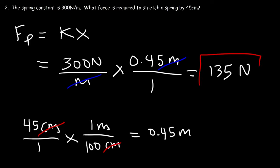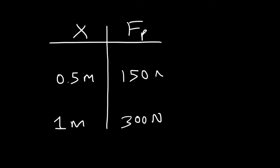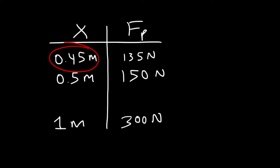So 135 newtons is the force required to stretch the spring by 45 centimeters. Keep in mind, if the spring constant is 300 newtons per meter, stretching by 1 meter requires 300 newtons, and by 0.5 meters requires 150 newtons. So at 0.45 meters, which is just under a half, 135 newtons makes sense. It's always good to take a mental check of your answers to verify they're reasonable.